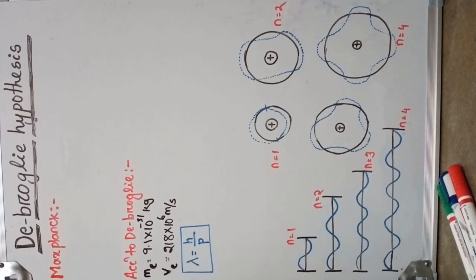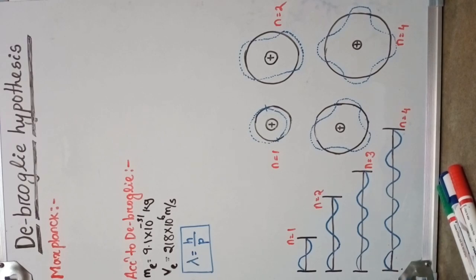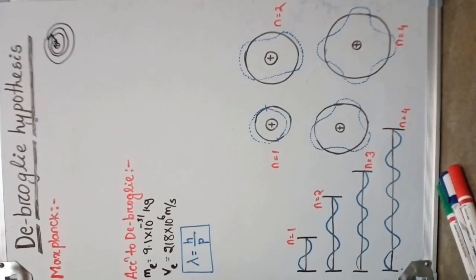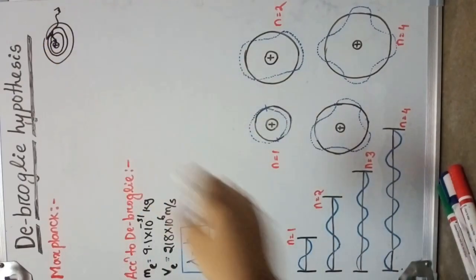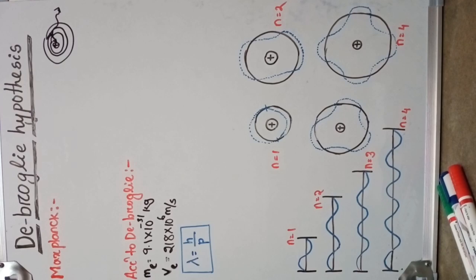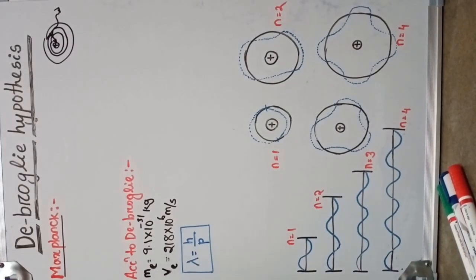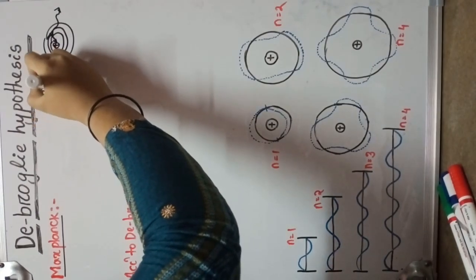Before we go to the de Broglie hypothesis, we first review our previous lecture. In our previous lecture, we discussed that if an electron transitions from a higher energy level to a lower energy level, it radiates energy, emitting radiation in the form of electromagnetic waves. Max Planck suggested that wave is made up of tiny particles called photons or quanta.